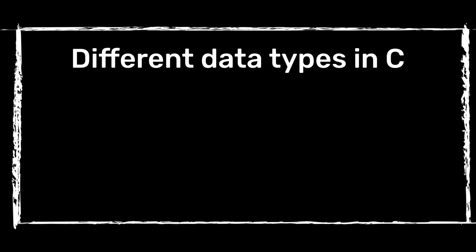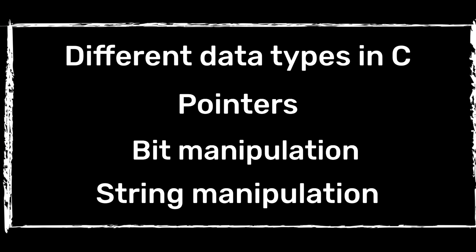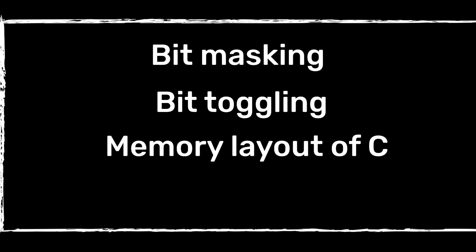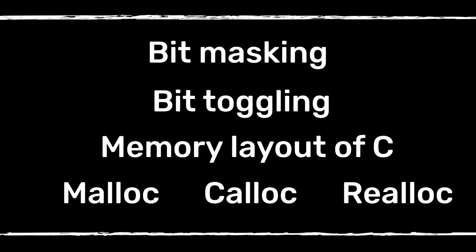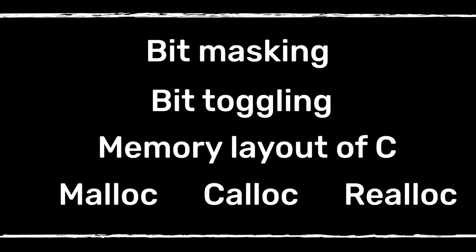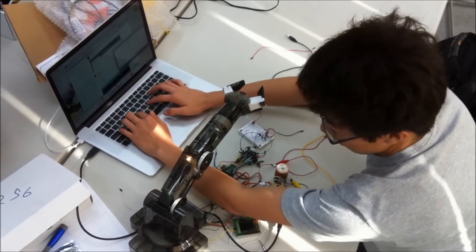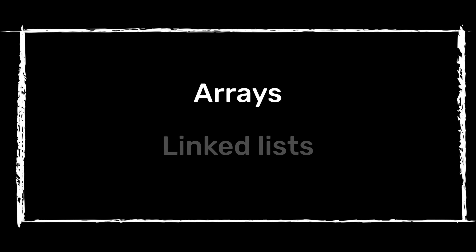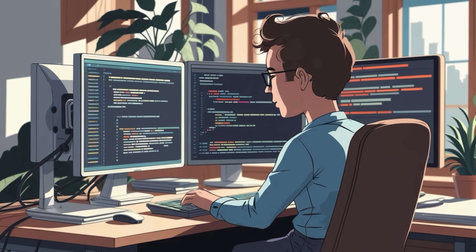To summarize C learning: first master different data types in C, then get comfortable with pointers, then master bit manipulation and string manipulation — especially bit masking and bit toggling. Then understand the complete memory layout of C and learn to create dynamic memory, knowing when to use malloc, calloc, realloc, and free. Though dynamic memory is usually not recommended for real-time embedded applications as it's a bit dangerous to use during runtime, in some cases you might still need it. Then start with basic data structures — arrays and linked lists — which are good enough to give you a very good foundation in C for embedded systems.